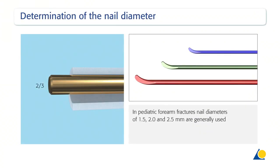The nail diameters are roughly two-thirds of the medullary isthmus of each bone. To prevent malalignment, nails of the same diameter are used, ensuring that the opposing bending forces are equal. In paediatric forearm fractures, nail diameters of 1.5, 2.0 and 2.5 mm are generally used. In this exercise, a 2.0 mm diameter nail will be used.